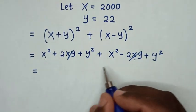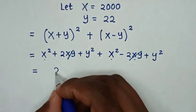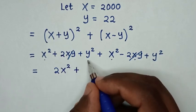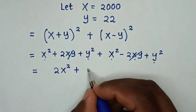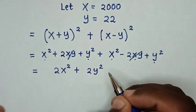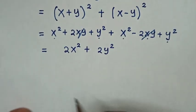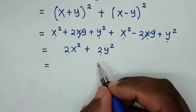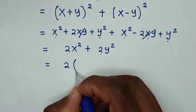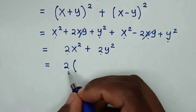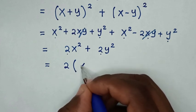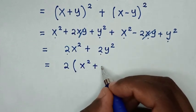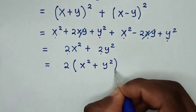Then x squared plus x squared is 2x squared, and y squared plus y squared is 2y squared. In the next step, 2 is common so we take 2 out of the bracket: 2(x squared + y squared).